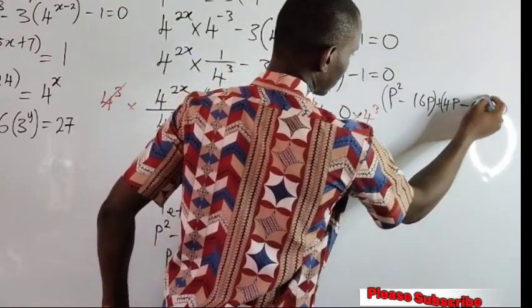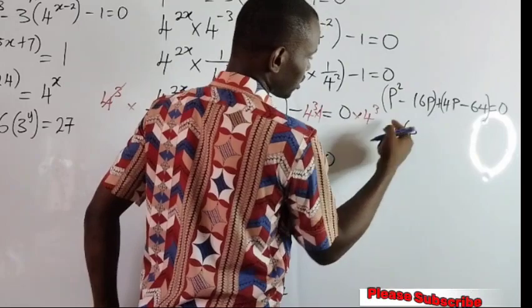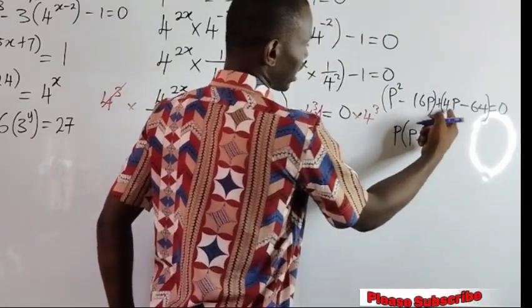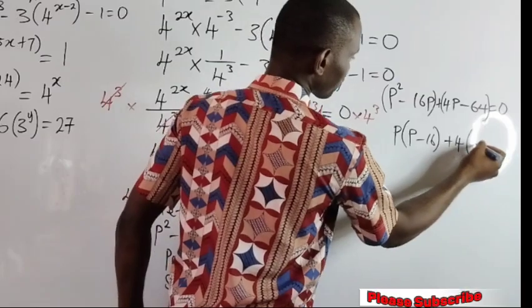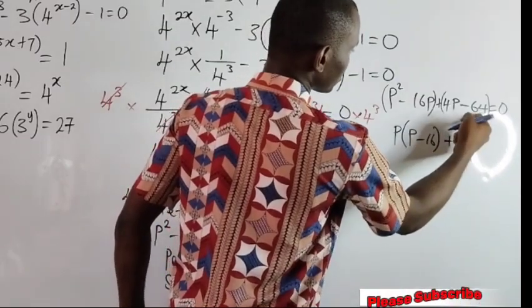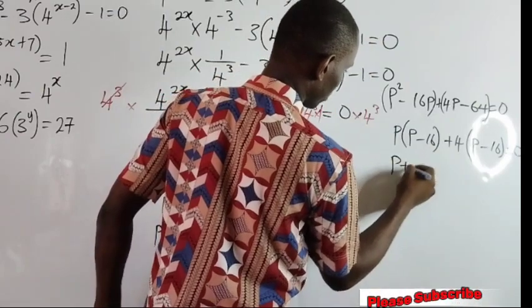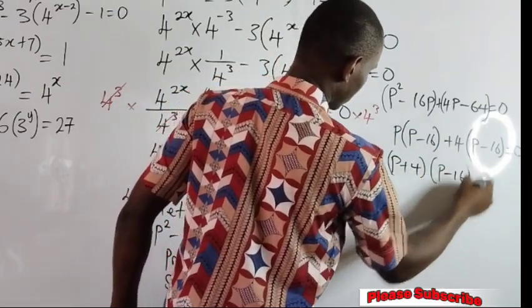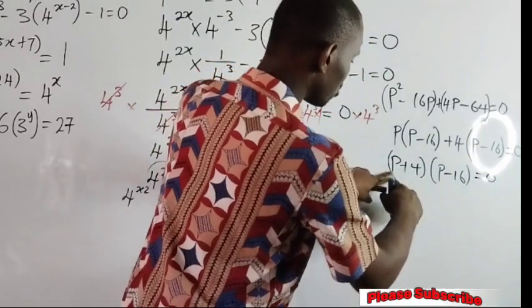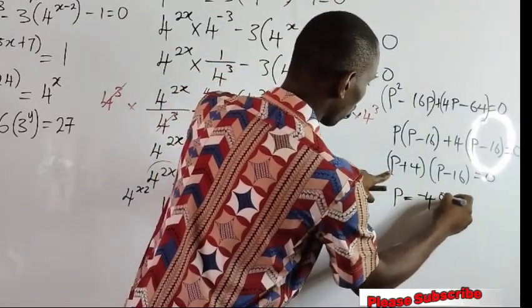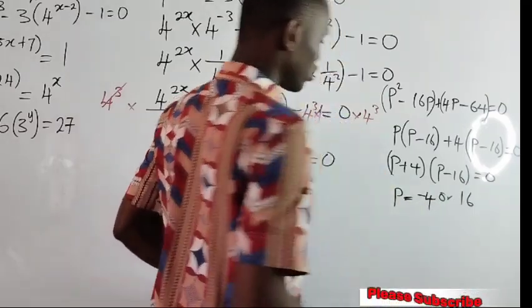We group and factorize. p is common in the first two terms: p divides p squared giving p, and p divides 16p giving 16. Then 4 is common in the last two terms: 4 divides 4p giving p, and 4 divides negative 64 giving negative 16, equal to 0. We can regroup as p plus 4 and p minus 16, both equal to 0. Since both brackets are the same, we deduce that p equals negative 4 or positive 16.